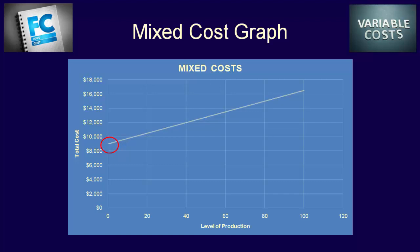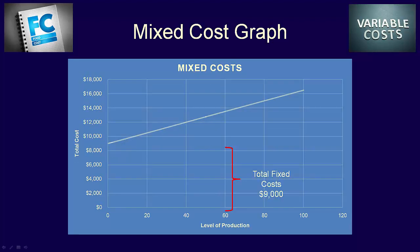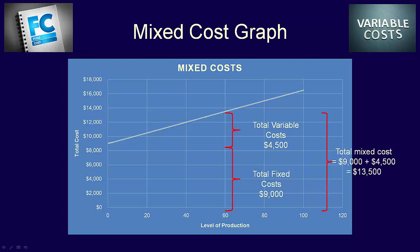If we analyze the graph at one level of activity, we can see the mixed cost formula. For instance, at 60 units, the space from the x-axis to the total fixed cost line equals the total fixed cost of $9,000. The space from the fixed cost point up to the total mixed cost line equals the total variable cost — for 60 units, that's 60 × $75 = $4,500. So the total mixed cost is $9,000 fixed plus $4,500 variable, for a total of $13,500.